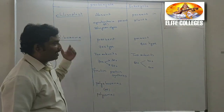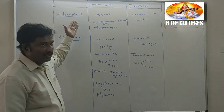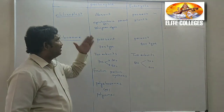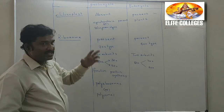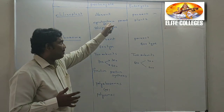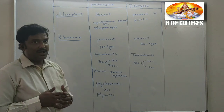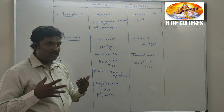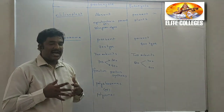Let us continue with the comparison of prokaryotes and eukaryotes. The next cellular organelle is the chloroplast. In prokaryotes, chloroplast is generally absent, but there are some exceptions — in bacteria such as cyanobacteria, also called blue-green algae, chloroplast is present. These cyanobacteria are phototrophic bacteria, meaning they undergo the process of photosynthesis.